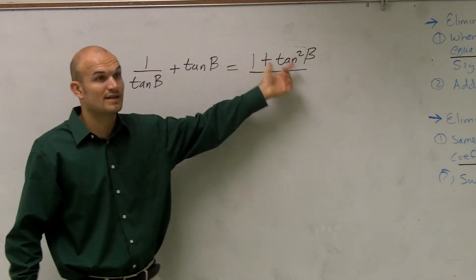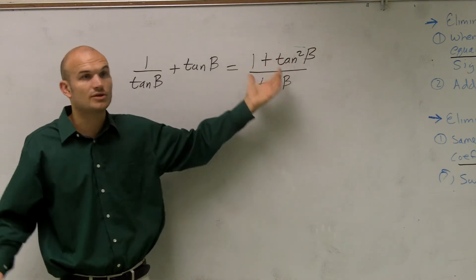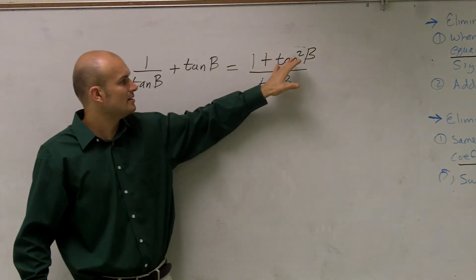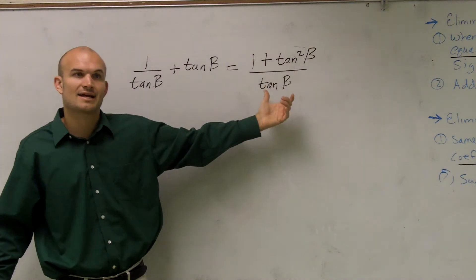my 1 plus my tangent squared—that's good. I can rewrite that as an identity, but that's just going to be simplifying this side again.